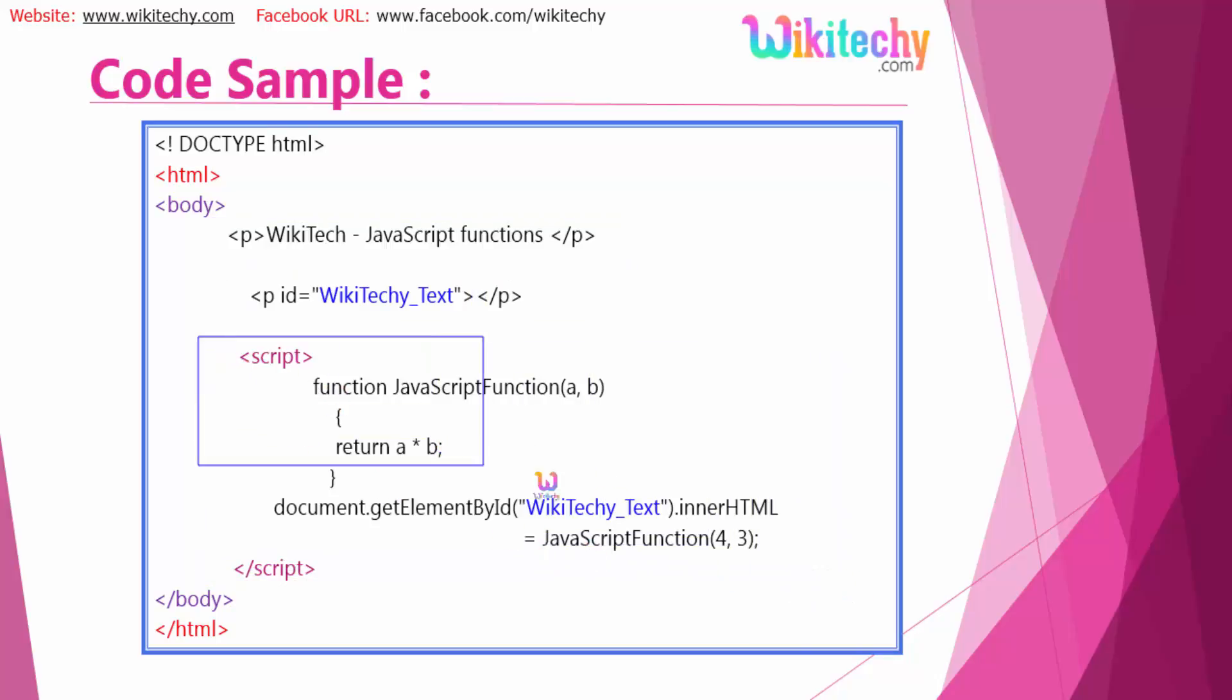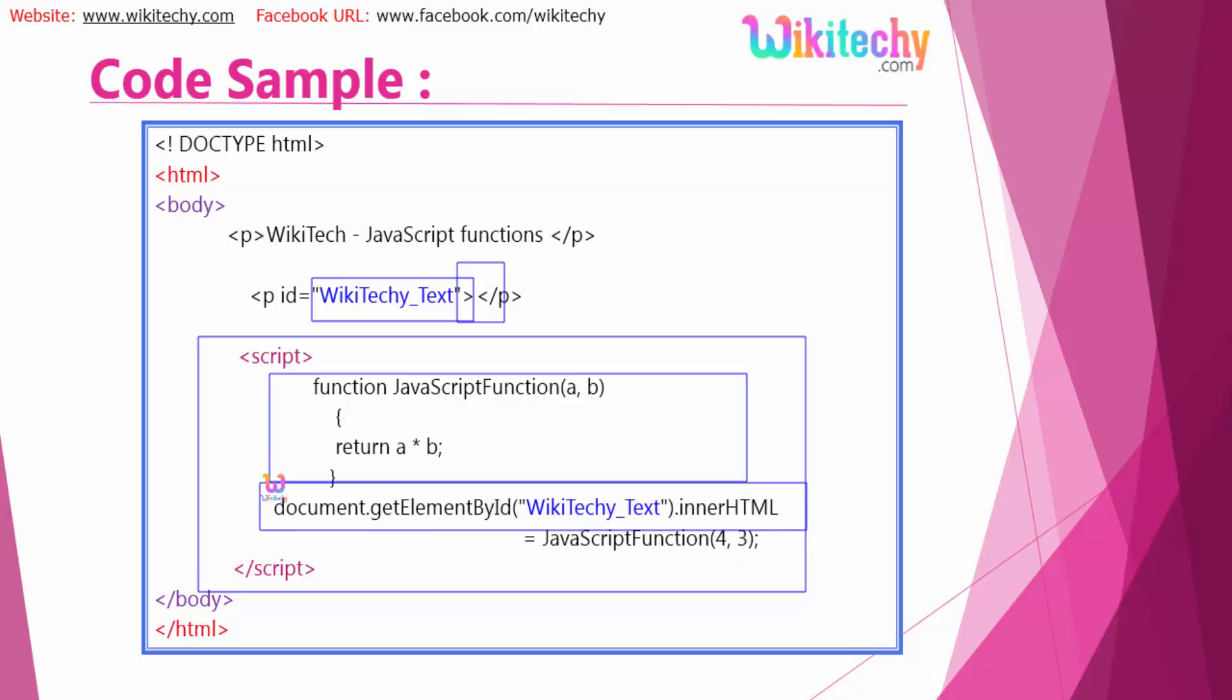You can see my JavaScript code here. Function with the name JavaScriptFunction with two parameters a and b, which will return the multiplication of a and b. Here is the function. document.getElementById WikiTechy_Text.innerHTML, I'm going to put a value here. What is the value? JavaScriptFunction 4 comma 3. So 4 into 3, this function will return 12 and this is assigned to this inner HTML.